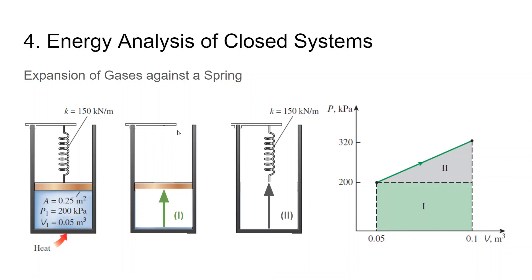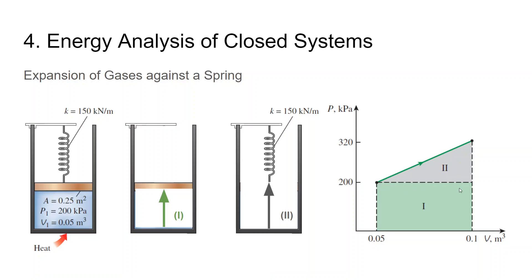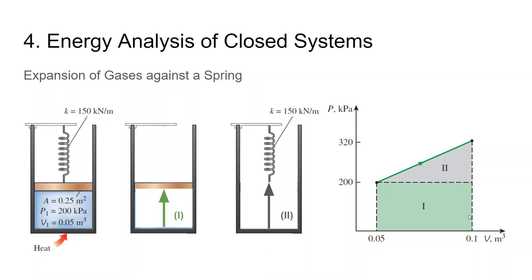Looking at the PV diagram, it has a specific shape. There is an opening, so atmospheric pressure remains constant whether the piston moves up or down. This means if we ignore the spring, the pressure inside must balance the outside pressure, giving constant pressure. If we consider only the spring, spring force is linear (F = kx), so the pressure contribution from the spring is also linear. We split the diagram into region 1 and region 2 accordingly.